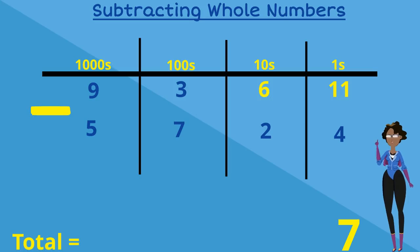In our tens column we now have 6 minus 2, which can be done because 2 is smaller than 6, and that answer is 4.